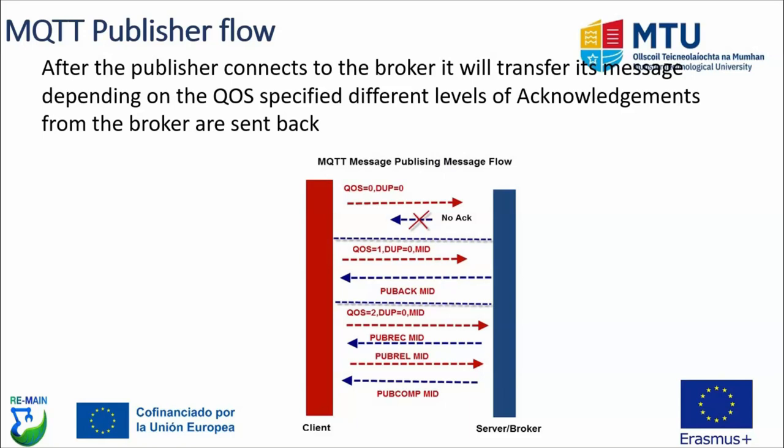The flow for the publisher depends on what quality of service is specified. With quality of service zero, no acknowledgements are expected back from the broker, as QoS 0 is fire-and-forget. With the highest quality of service, QoS 2, there are multiple interactions with the broker as it confirms reception and confirms delivery of the message.